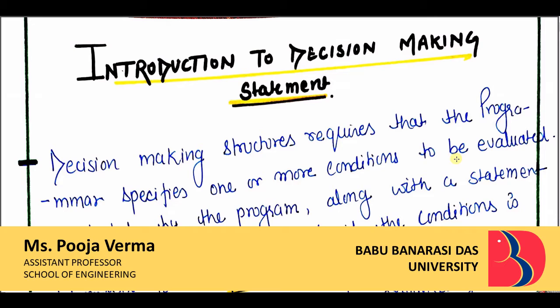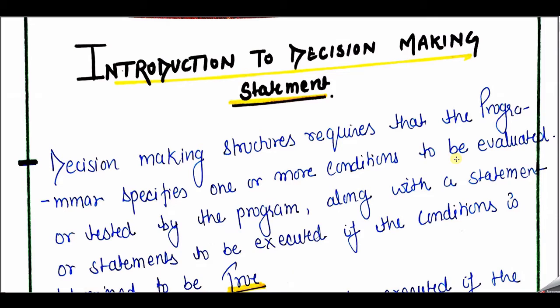I am going to take my lecture on the subject concept of programming language C. In the previous lecture we already completed our study of operators in C, and now I am going to discuss about the decision-making statements — how we can use those operators which we already covered in using decision-making statements.